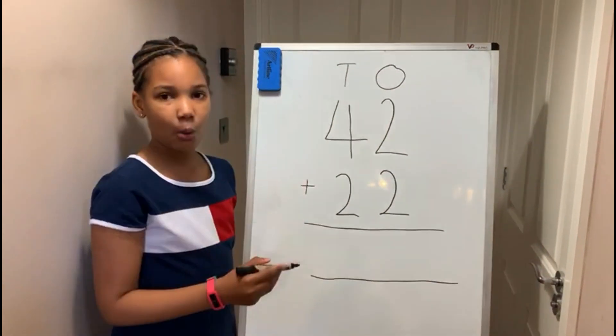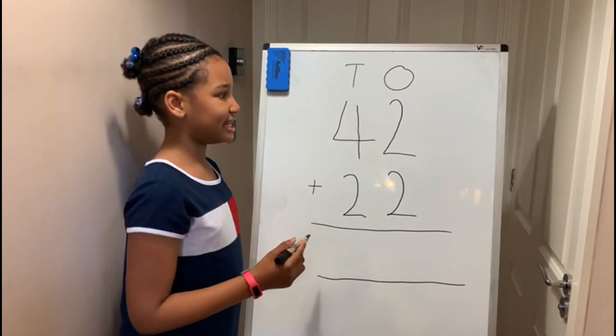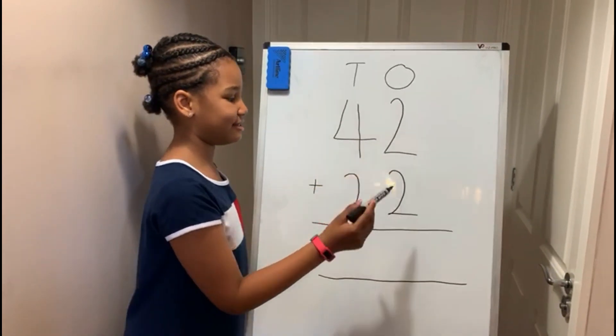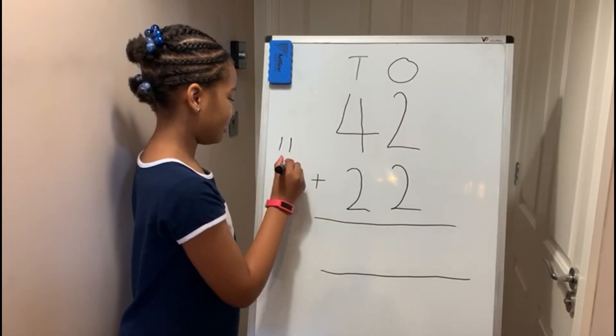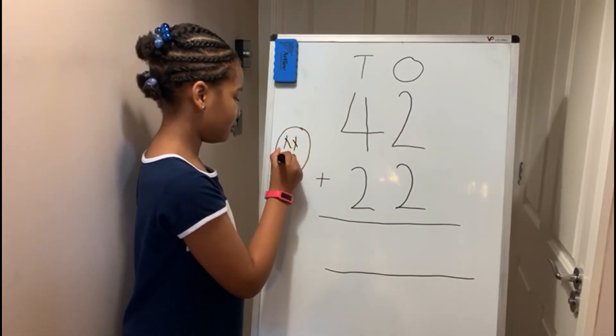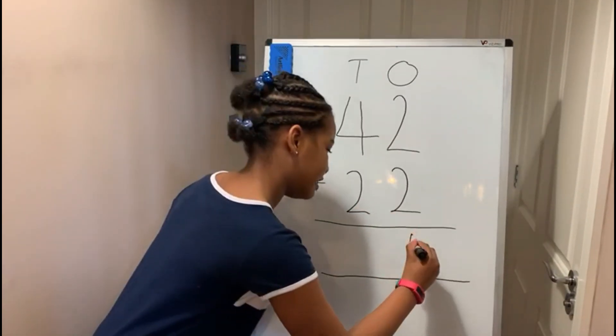We always start with the ones column, because of that firstly we do two add two. You write this two here and this two here. Add it all together: one, two, three, four. That's your answer in there.